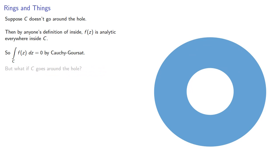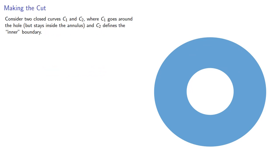But what if C goes around the hole? To answer this, let's consider two closed curves C₁ and C₂, where C₁ goes around the hole but stays inside the annulus, and C₂ defines the inner boundary.